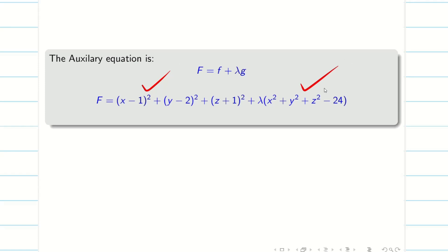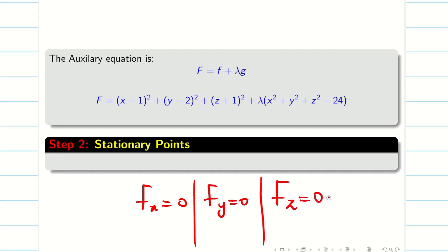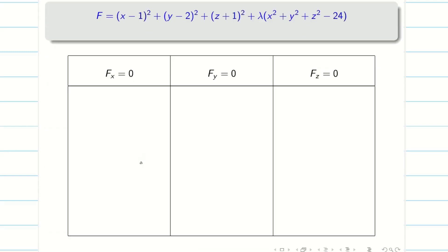Next we go to step 2: stationary points. The stationary points are found by setting F_x = 0, F_y = 0, and F_z = 0. Usually in all our problems we try to eliminate λ or −λ, but it is not always necessary. We can eliminate lambda in a different format. If the answer comes quickly, we can try a different approach.